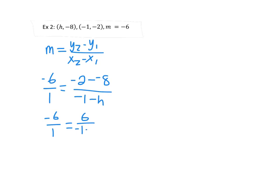I'm going to do one more example out. If you don't feel like you need it, you don't have to watch it. So I'm going to fill my numbers into the formula, m equals y2 minus y1 over x2 minus x1, like so. And I get this. I put the negative 6 over 1 to help me in my calculations. So I have negative 6 over 1 equals 6 over negative 1 minus h.